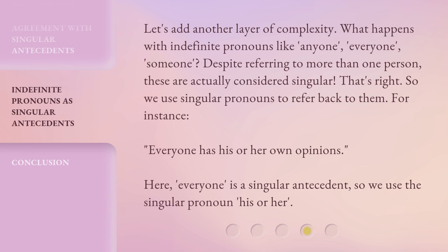Let's add another layer of complexity. What happens with indefinite pronouns like 'anyone,' 'everyone,' or 'someone'? Despite referring to more than one person, these are actually considered singular. So we use singular pronouns to refer back to them. For instance: 'Everyone has his or her own opinions.' Here, 'everyone' is a singular antecedent, so we use the singular pronoun 'his or her.'